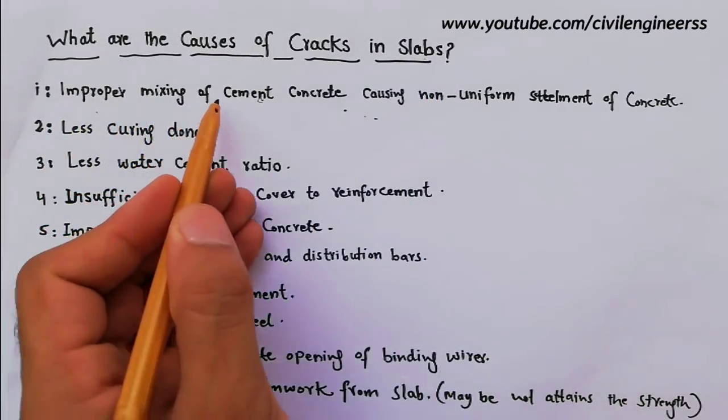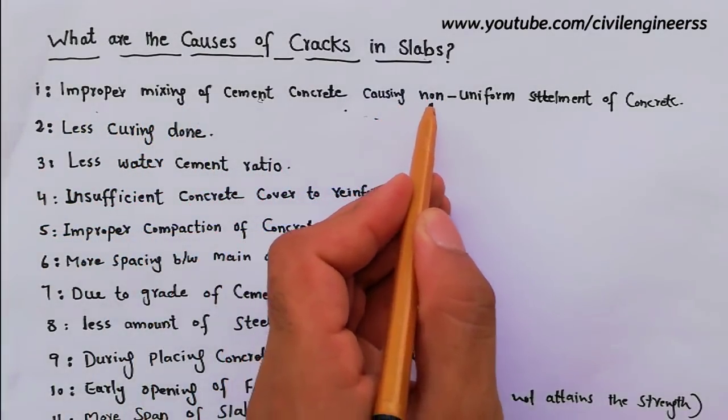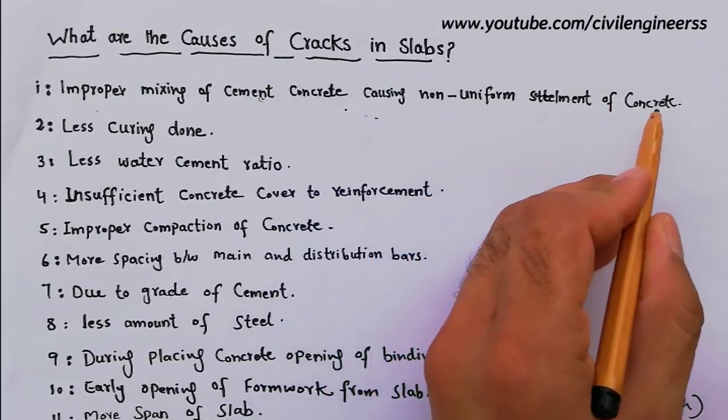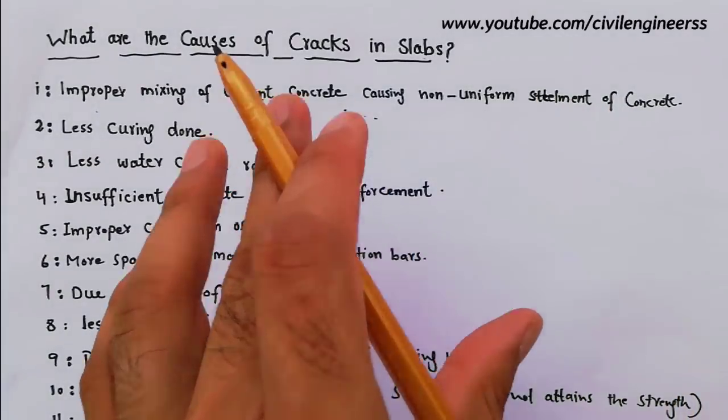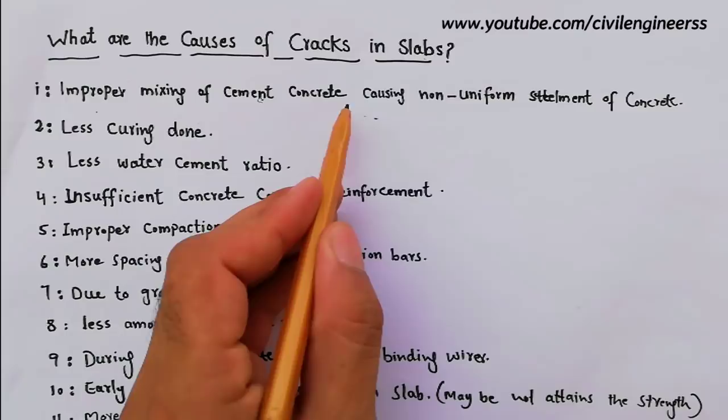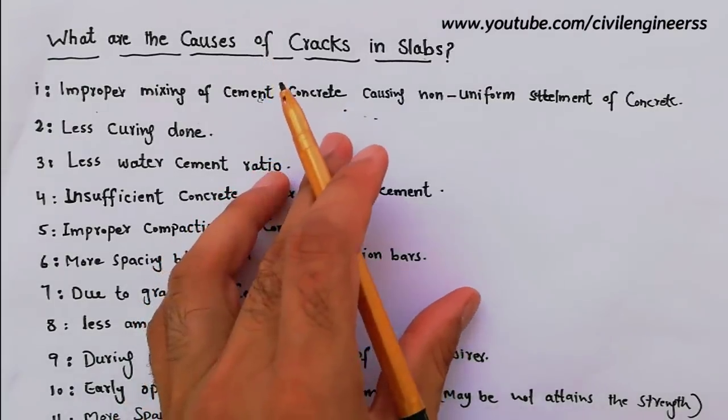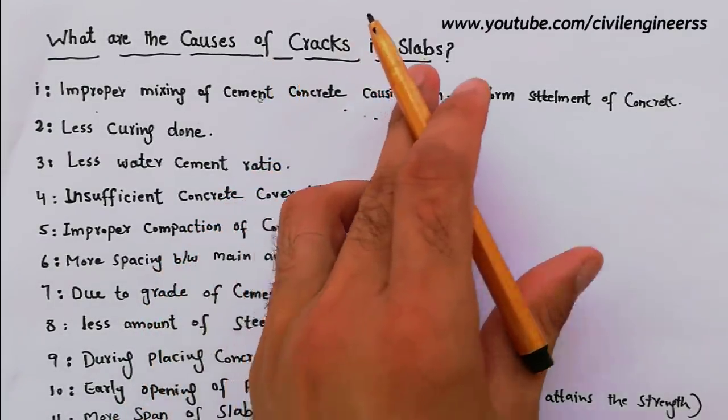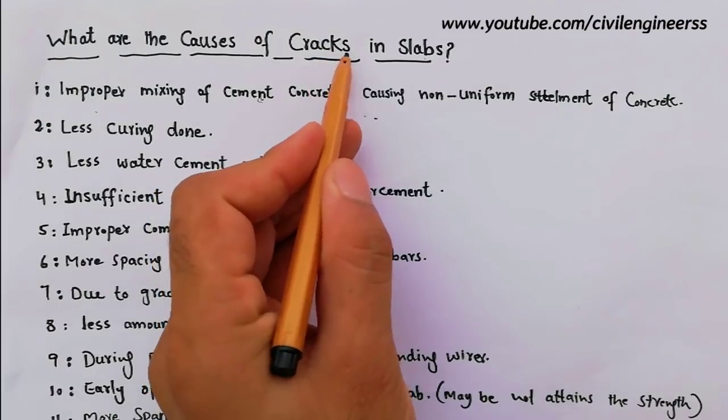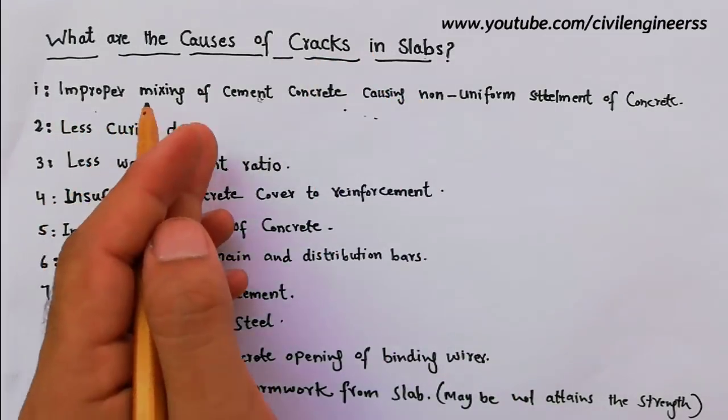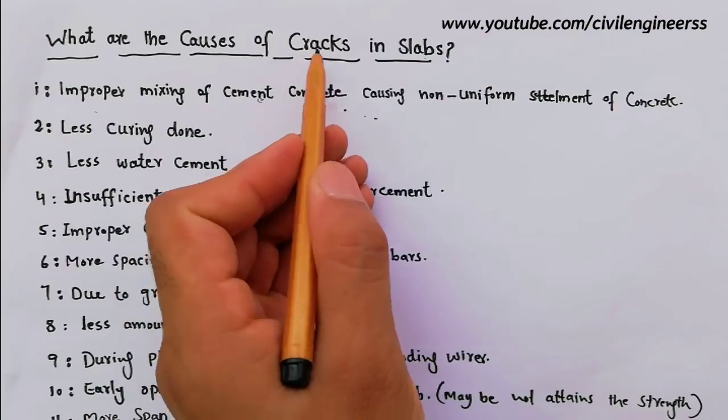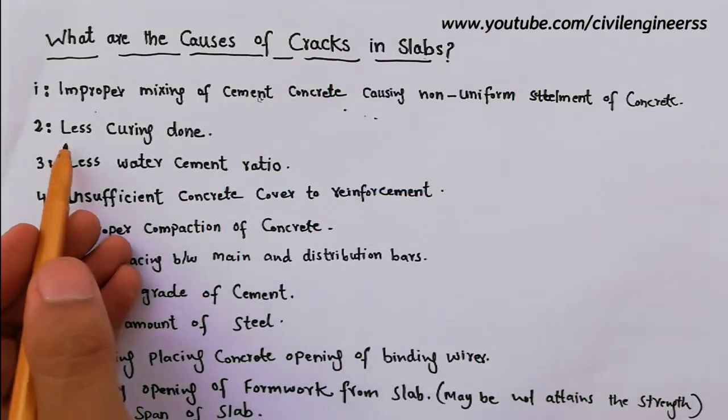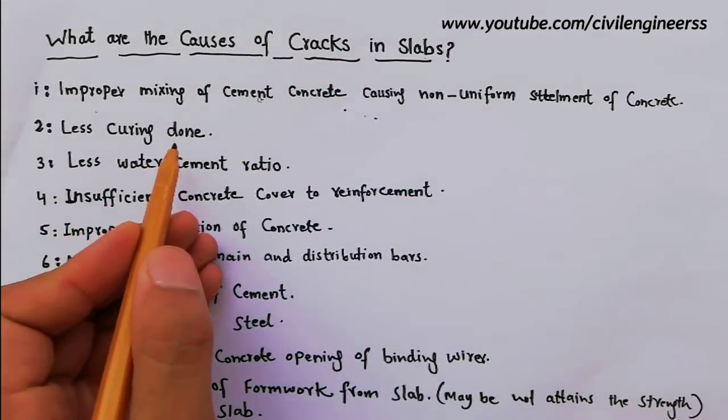The first one is improper mixing of cement concrete causing non-uniform settlement of concrete. We have to do proper mixing of cement concrete, otherwise the concrete will crack. So improper mixing is a cause of cracks in slabs.